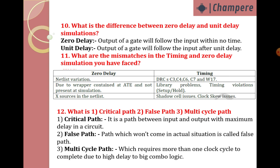What are the mismatches in timing and zero delay simulation? In zero delay simulation, mismatches include: netlist variation due to wrapper content in ATPG not present at simulation, and X values versus 0/1 in the netlist. In timing simulation, mismatches include DRCs C3, C4, C6, C7, and W17, library problems, timing violations such as setup and hold violations, shadow cell issues, and clock skew issues.